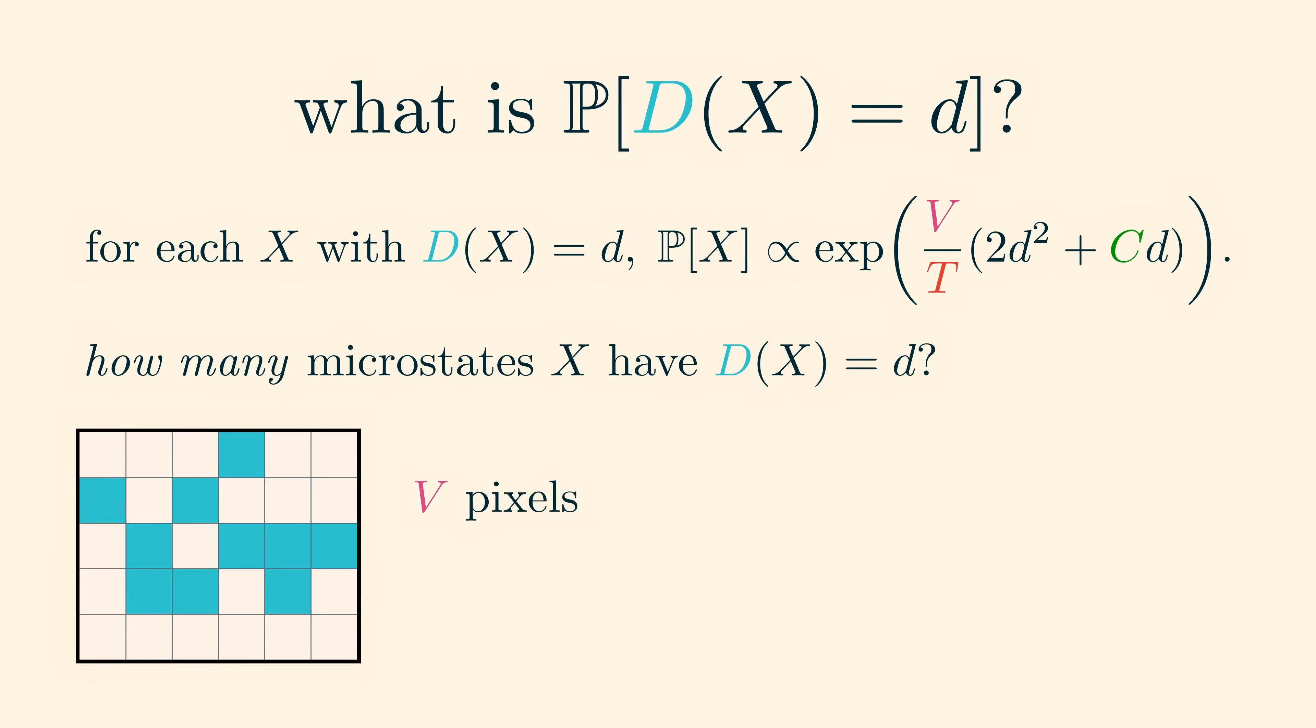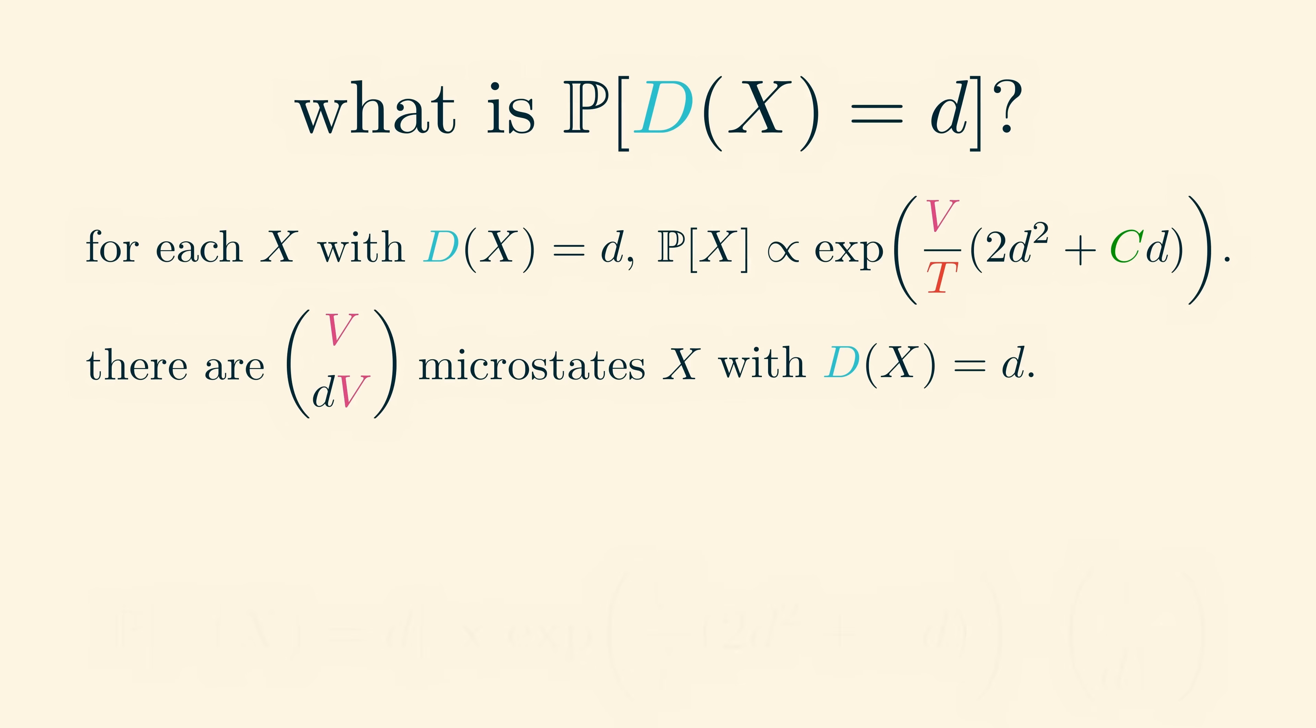There are v pixels in total, and for a microstate to have density d, it must have d times v molecules. So let's only consider values of d for which d times v is actually a non-negative integer. For these values, there are exactly v choose dv configurations of dv molecules in v pixels, since we just need to choose which pixels have molecules in them. So the probability that big d of x equals little d is the same common exponential factor times this number of microstates with density d.